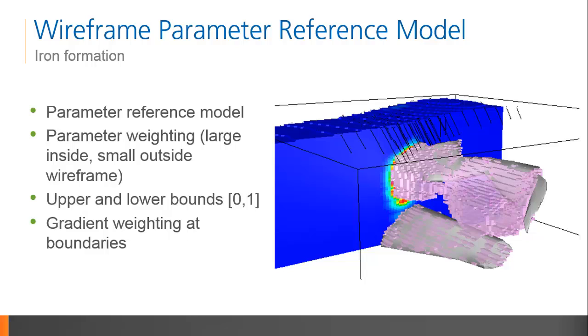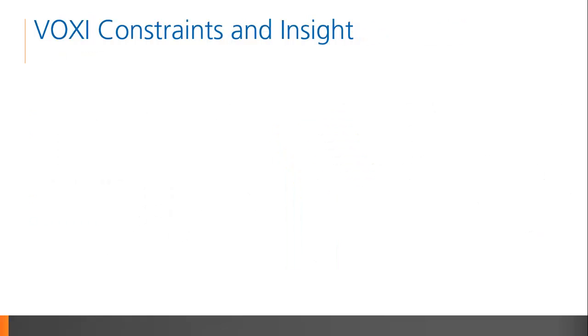The result here is shown in pink. By using the parameter reference model, we were able to force the inversion to place susceptibility in the lower iron formation, but let it vary freely outside of the wireframe. We still see a connection between the two wireframes, and can thus say that it is not an artifact due to the absence of susceptibility in the lower formation. In this case, by using constraints, the inversion was able to tell us something that we weren't able to see from the drilling. It should be noted that all the inversion outcomes in this example fit the observed magnetic data equally well. However, each fit with the assumed geology a little differently. Choosing the right model requires a mutual consistency between the model and all known observations.